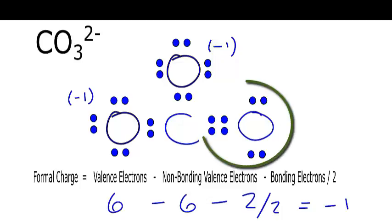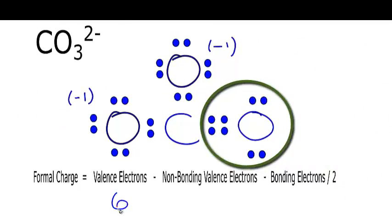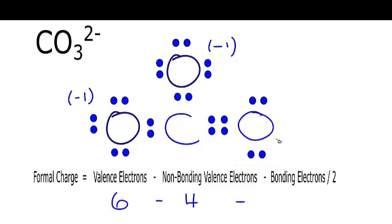Let's do the outside oxygen on the right. Again, oxygen is 6 on the periodic table. We can check that. Minus non-bonding. These are the outside valence electrons not involved in bonds. 2, 4 minus the bonding electrons. And we have 2, 4 of those, which we'll divide by 2. 6 minus 4 is 2, minus 2 is 0. So the formal charge here is 0.